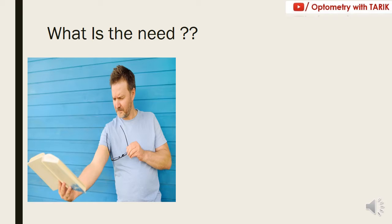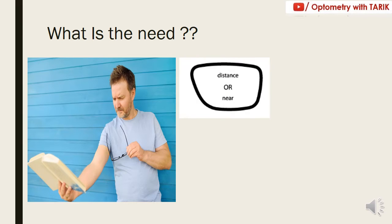To correct this, we can give a prescription which will have a distance as well as a near prescription, or only a near prescription. How can this be prescribed in the form of spectacles? The first option is distance and near as separate glasses. The prescription for distance can be made separate and the near prescription in separate glasses. But this becomes quite difficult for the patient, as carrying two spectacles at the same time is very difficult and changing from distance to near alternately is again a big issue.